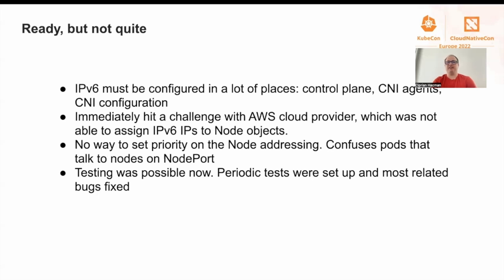IPv6 must be configured in lots of places — and I really mean lots of places. Both the control plane and CNI must be configured, and they must actually agree on that configuration.